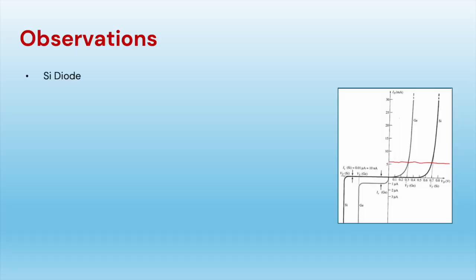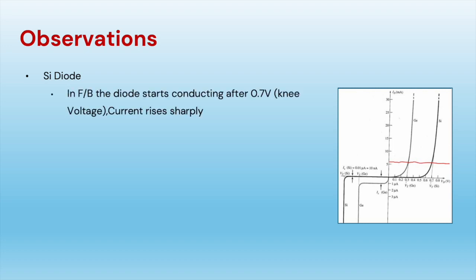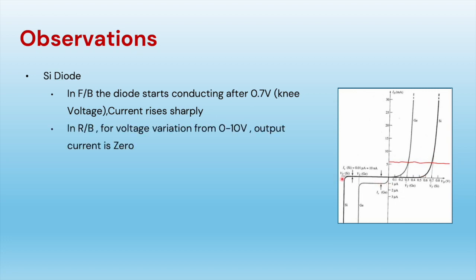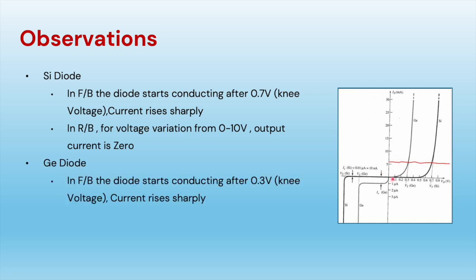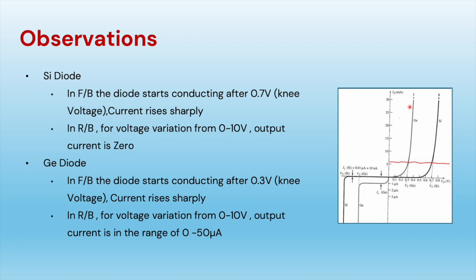From the experiments, we observed the behavior of silicon and germanium diodes. In silicon diode, forward bias starts conducting at 0.7 volts — the knee voltage — and after 0.7 V the current rises sharply. In reverse bias from 0 to 10 volts, the observed current is 0. For germanium diode, forward bias starts conducting at 0.3 volts. After 0.3 V the current rises sharply. In reverse bias, current is observed in the range of microamperes.